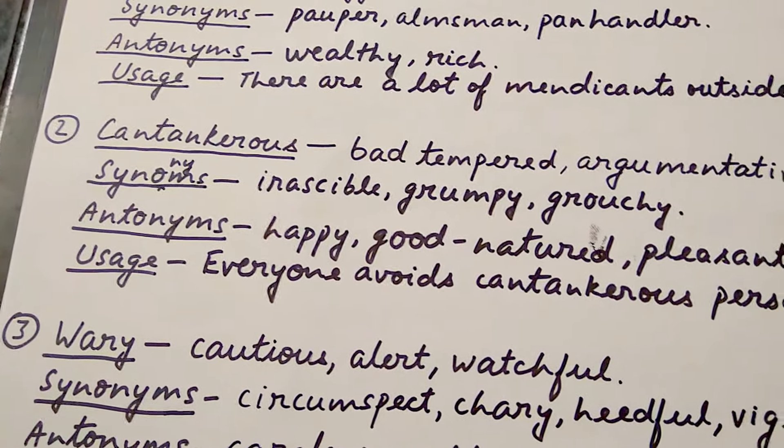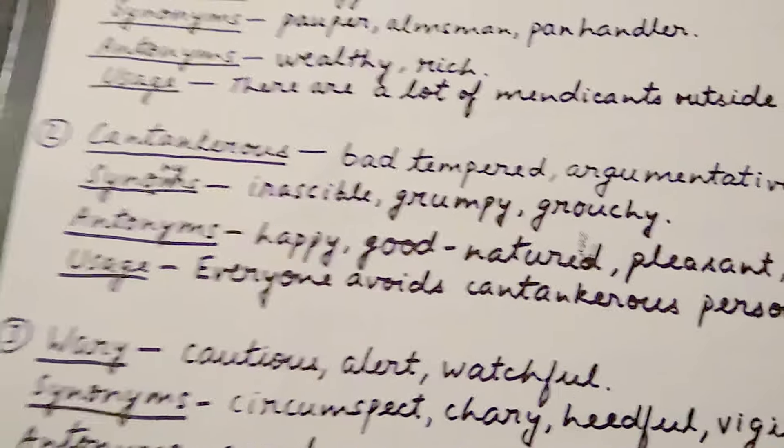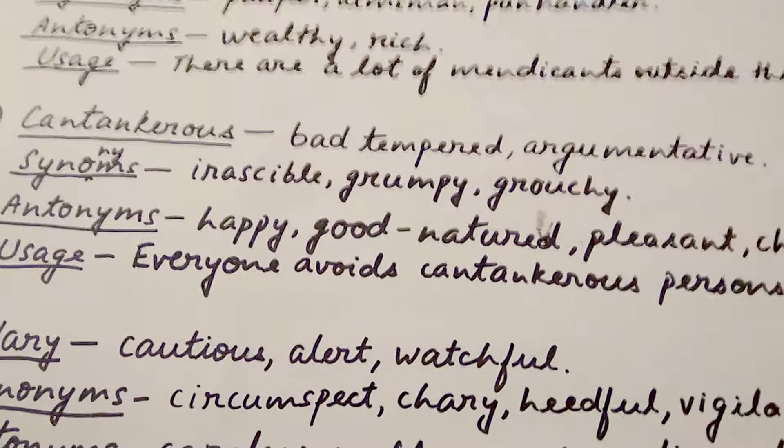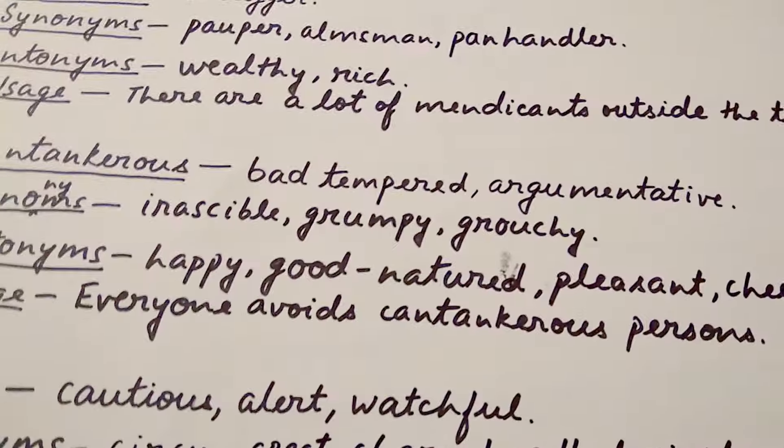The trick to remember 'cantankerous': think of 'can't' and 'tank' — a water tank. If there is no water tank in the 'cant' area, people's tempers will get bad, they will become quarrelsome and argumentative.